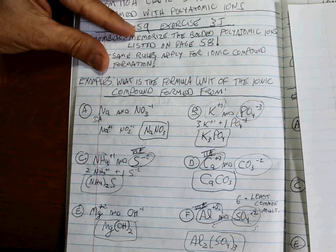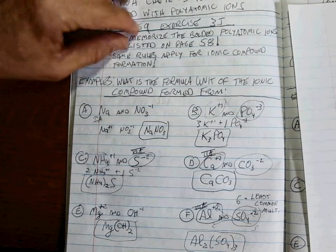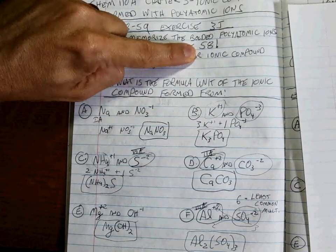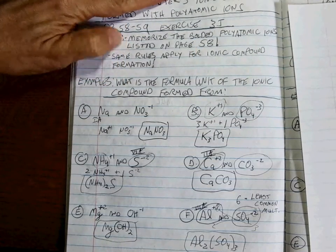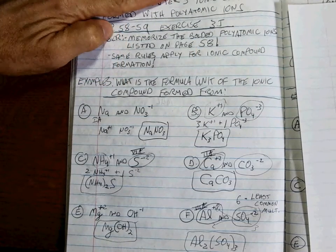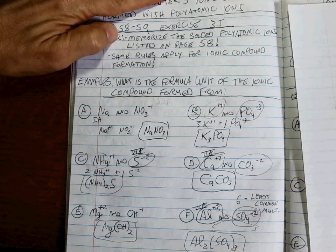That's the formula — I hope that's what you got! Practice this, and make sure you memorize the polyatomic ions that are in bold on page 58. That will make your life a lot easier.